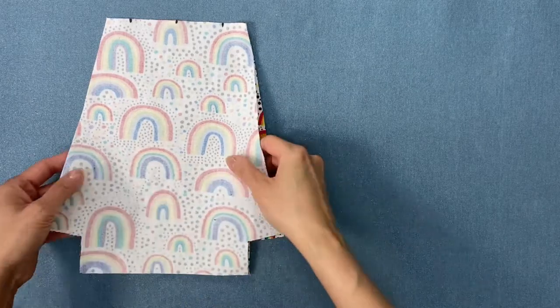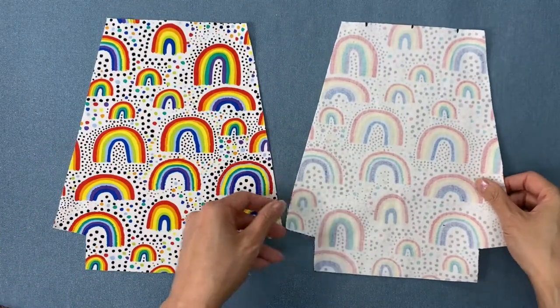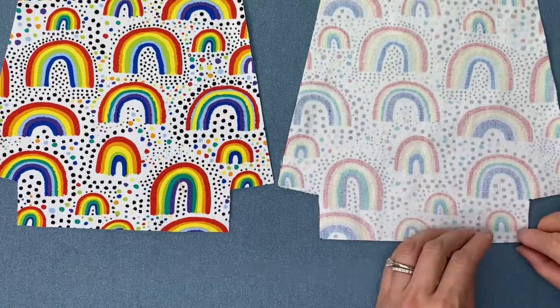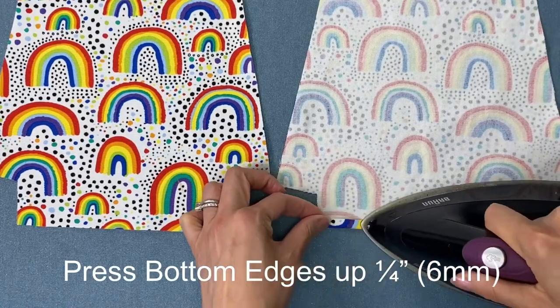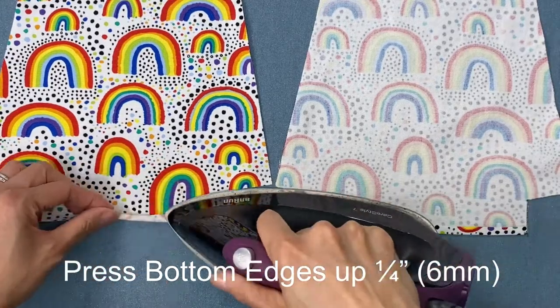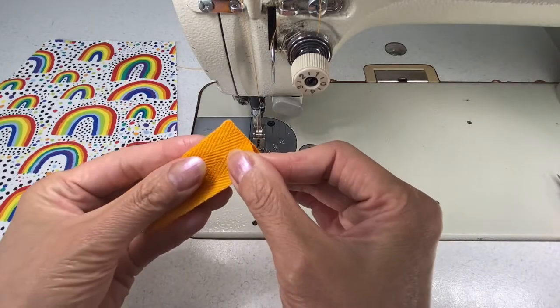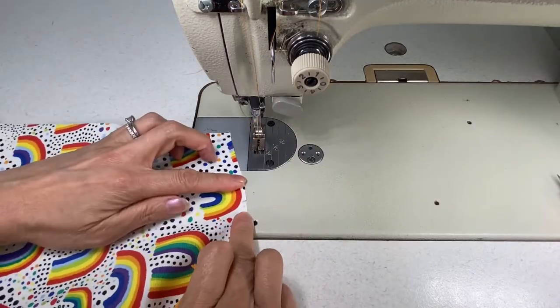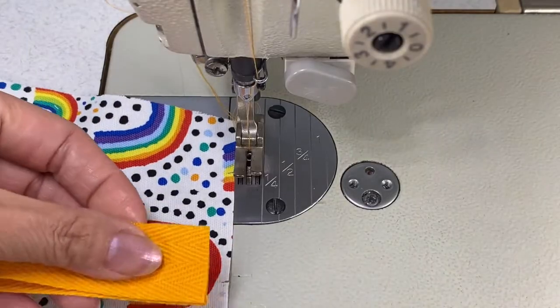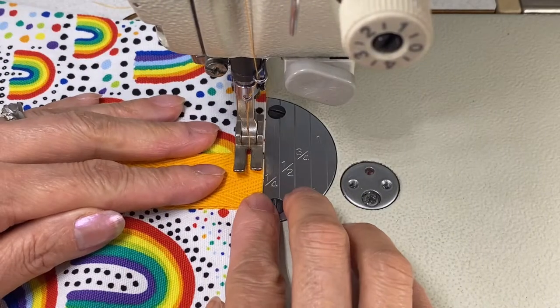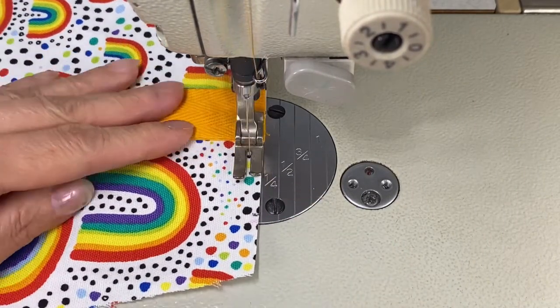Separate your pieces so that you have one side with the right side up and the other with the wrong side facing up. Next we're going to turn up and press a quarter of an inch all along the bottom edges. Fold your cotton tape in half matching the short edges together and then just place it onto the right side of the fabric centering it onto that middle notch and just do a few stitches to hold it in place.